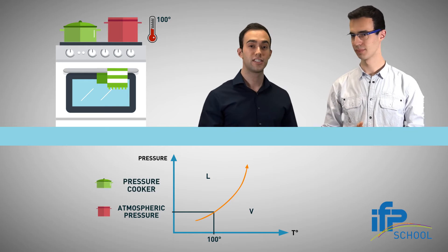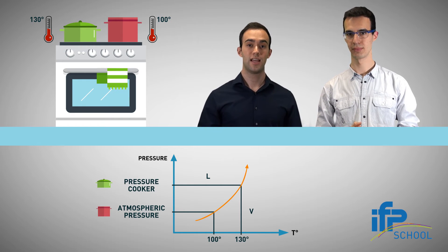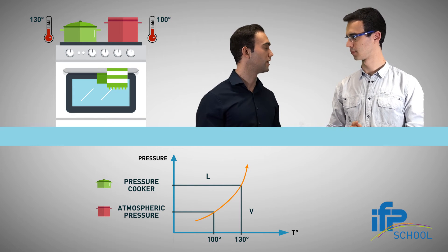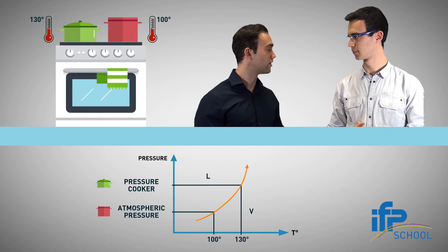However, in a sealed pressure pot, the pressure rises and the temperature rises a little as well, resulting in food cooking faster.